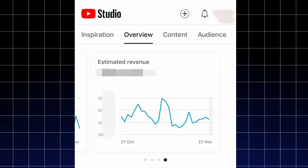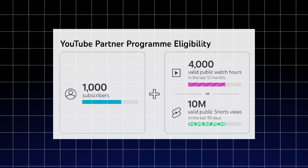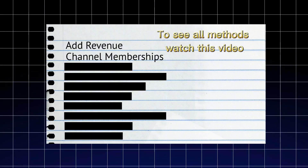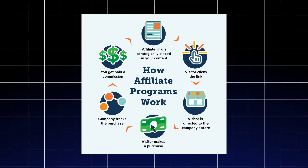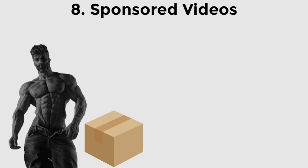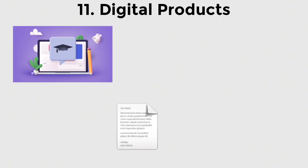Let's talk about monetization. Once your channel meets the YouTube Partner Program requirements — 1,000 subscribers and 4,000 watch hours — you can start earning from ads. But ad revenue isn't the only way to make money. Affiliate marketing is another excellent option. For example, if your niche is tech reviews, you can include affiliate links to products you mention in your videos. Whenever someone clicks the link and makes a purchase, you earn a commission. I have a whole video about the methods to earn money with your channel — you can watch it too. You can also partner with brands for sponsorships, where they pay you to feature their products or services. And if you have your own products or courses, you can promote those as well.